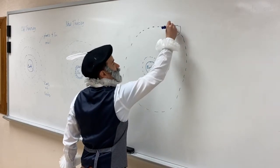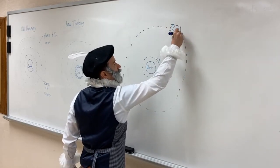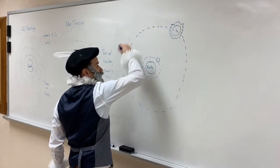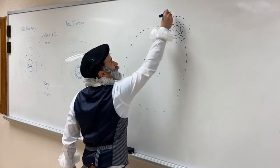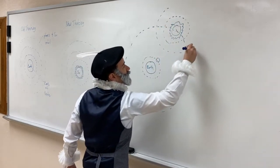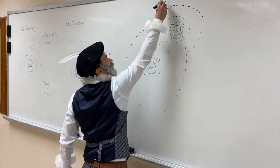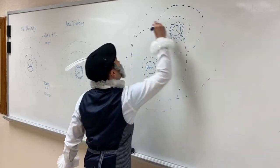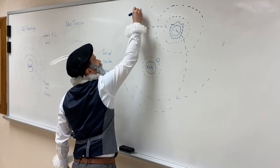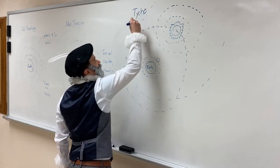And here's the Sun, such that it orbited around the Earth as the other planets orbited around it. So this is Tycho Brahe system.